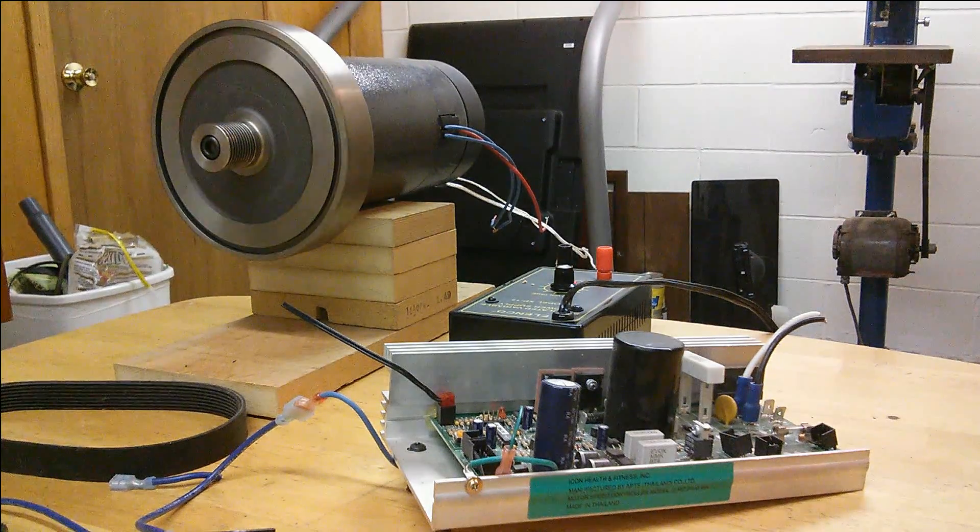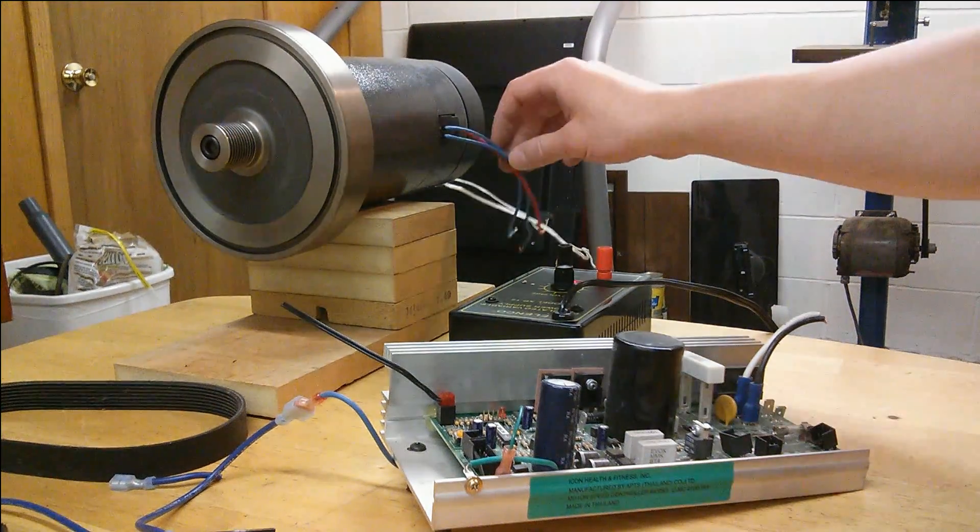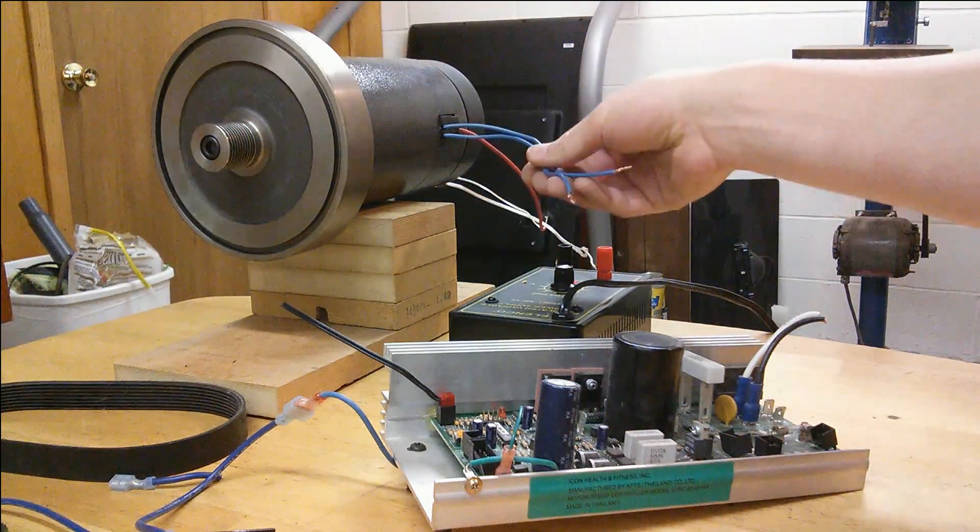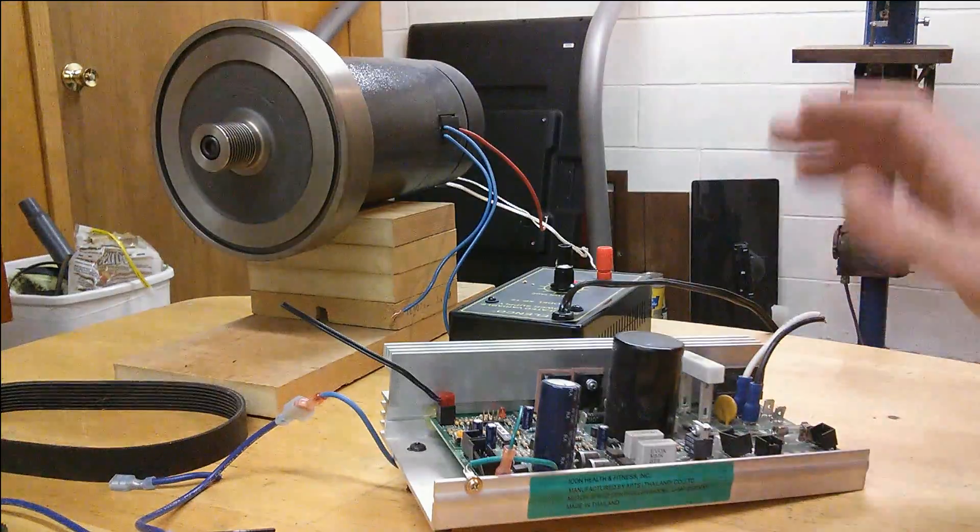And I'm just running it on 15 volts right now, but it seems to be working. From what I've been reading, the blue wires are actually just for a thermal protection circuit and don't actually need to be used, so it's just a straight-up DC motor.